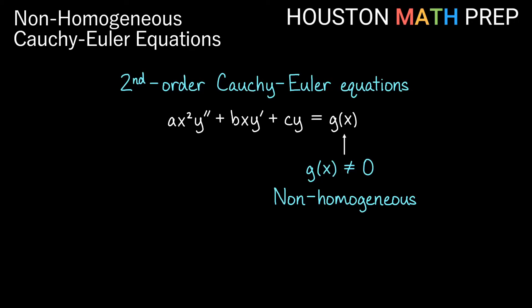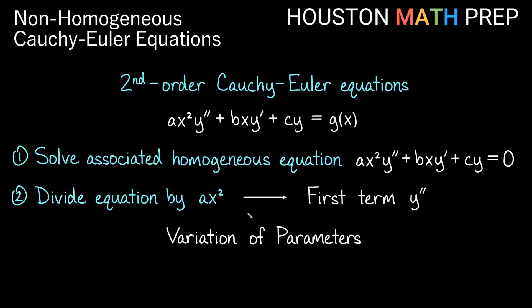Welcome back everyone. Houston Math Prep here to go over solving non-homogeneous Cauchy-Euler equations. That's when our g of x on the right side is not equal to 0. Remember, Cauchy-Euler equations have the power of x matching the order of the derivative — x squared y double prime, x y prime, and a y term. We are going to solve these using the variation of parameters method, so make sure you're familiar with that method.